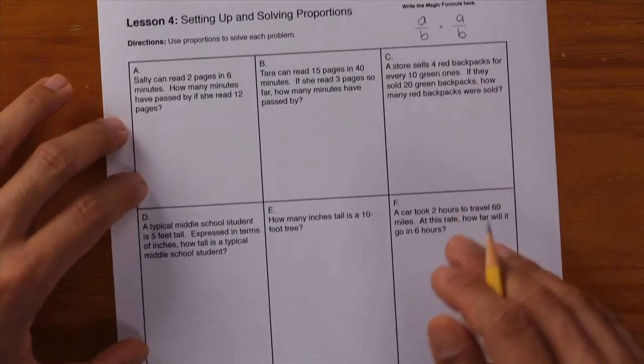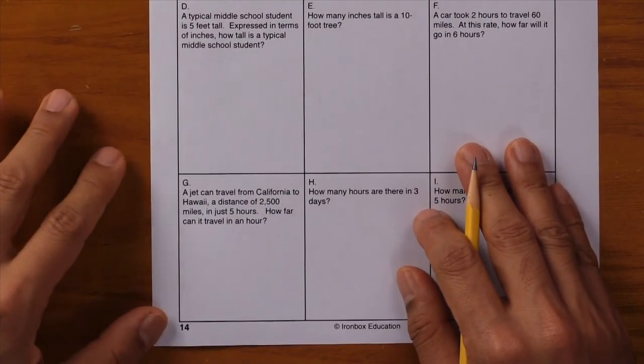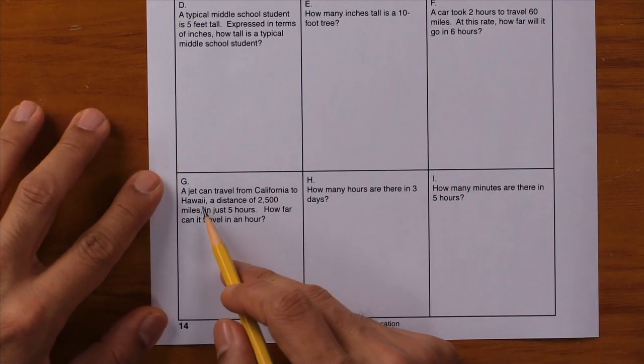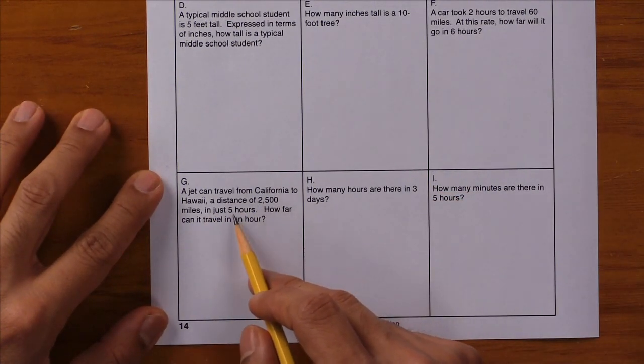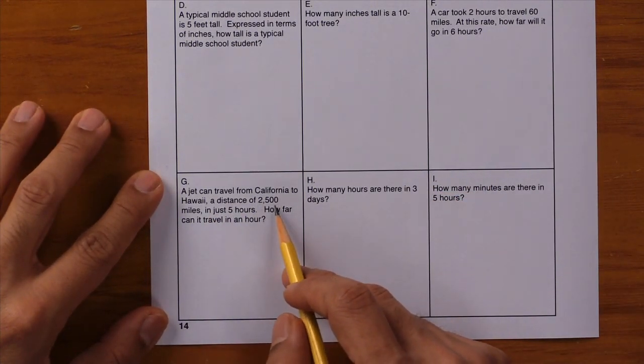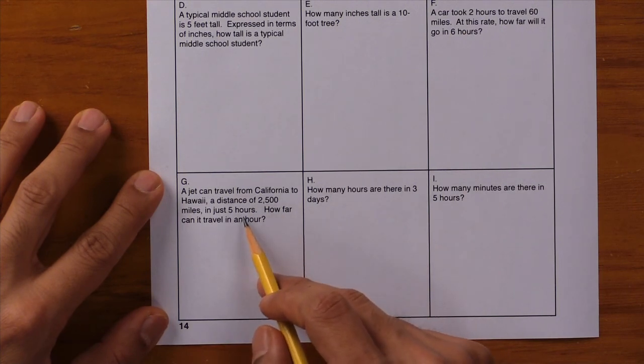Let's do one example. Since I grew up in Hawaii and live in California, let's do box G. Here's box G: A jet can travel from California to Hawaii a distance of 2,500 miles in just 5 hours. How far can it travel in an hour?